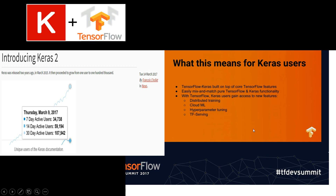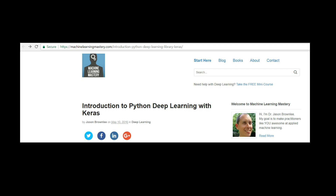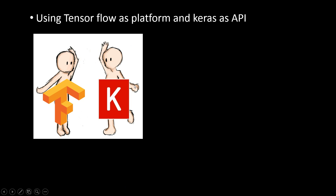This slide is from the TensorFlow Development Summit in February 2017 — I'll provide the link so you can have a look. It says TensorFlow Keras is built on top of core TensorFlow features, and we can easily mix and match pure TensorFlow and Keras functionality. With TensorFlow, users can gain access to distributed training, Cloud ML, hyperparameter tuning, TF Serving, and so many things. We'll use both — implementing networks in TensorFlow and also mixing TensorFlow and Keras, using TensorFlow as the platform and Keras as the API.